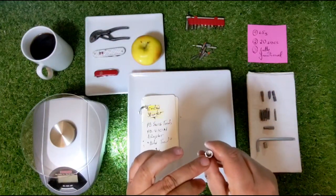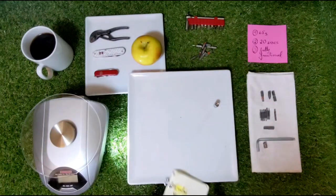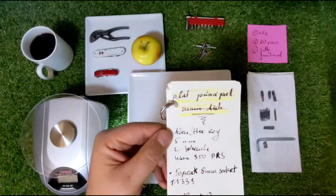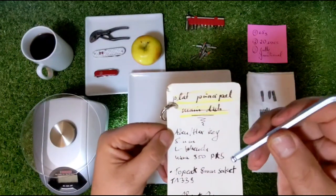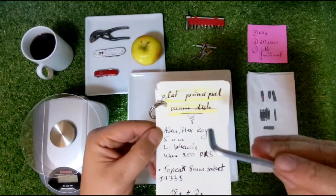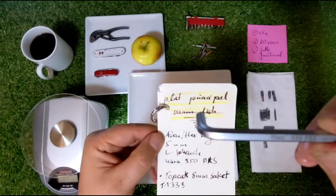Now we go to the main course, the main dish. We use the allen hex key, size 5. In my case it's the Wera 950.